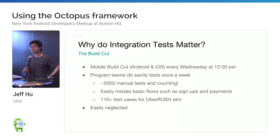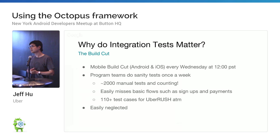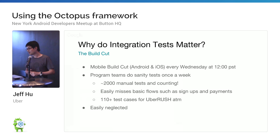At Uber we have two different groups. One is the platform team, one is program teams. For Uber Eats and Uber Rush, for example, those are part of the program teams, more focused on the product. There are also other program teams like driver experience, driver engagement, rider experience, and payment teams.